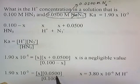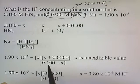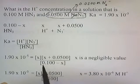x + 0.05 is going to be virtually equal to 0.05. Likewise, on the bottom, if we subtract x from 0.1, x is so small it's going to be a value that's very close to 0.1. So instead of writing 0.1 - x, we just write 0.1.